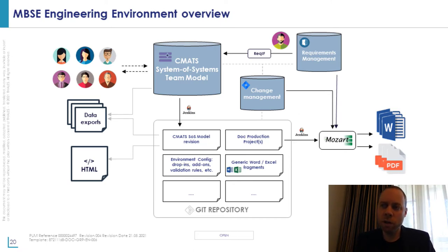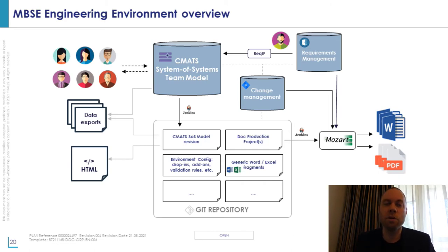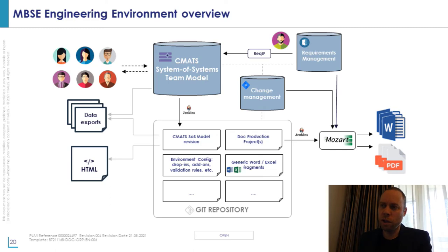The last point is regular retrospectives. At regular intervals, we held a team retrospective where we sat down, looked back at the past period, identified what was going well and what needed improvement. This really helped us improve bottlenecks and day-to-day activities. One example is these data exports — that was a direct effect of a retrospective. Also, the fact that we now maintain the coupling of requirements to model elements inside the model rather than inside DOORS came out of one of those retrospectives. So it's really key to have retrospectives regularly and to act on the actions coming out of them.